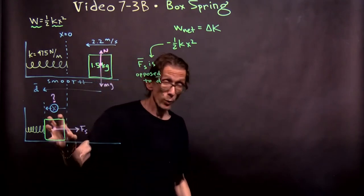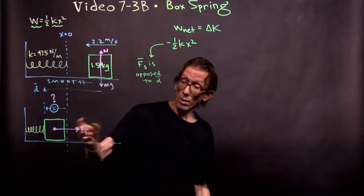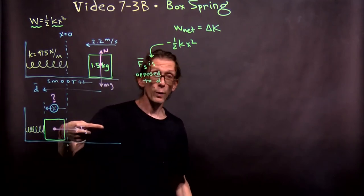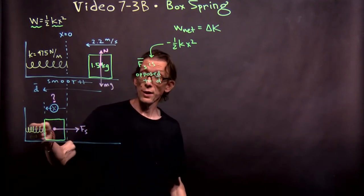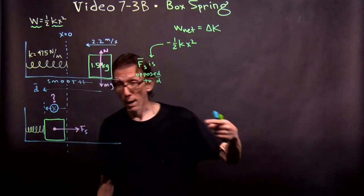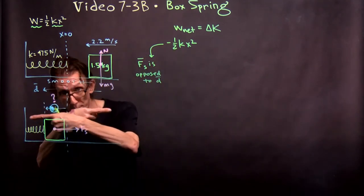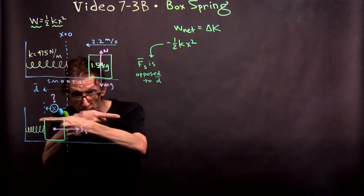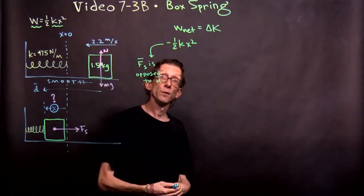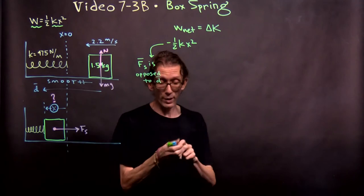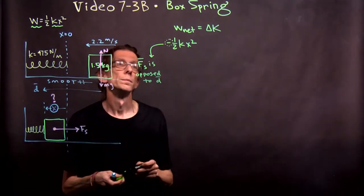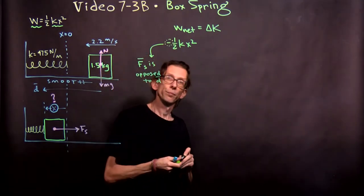Once the block turns around and moves back the other way, the spring force will be to the right and the displacement will be to the right, so the spring will do positive work on the block. But while the block is moving one way and the spring force is pushing the other way, the spring is doing negative work. That's where the negative sign comes from.